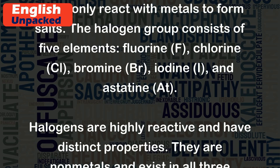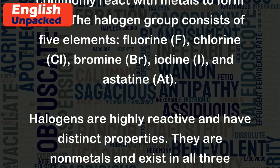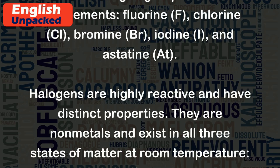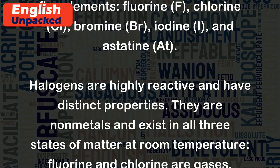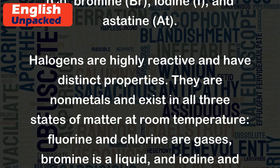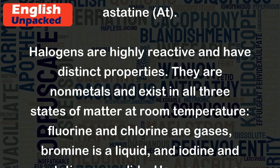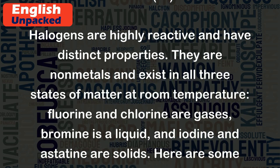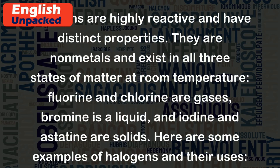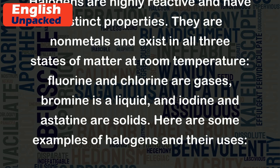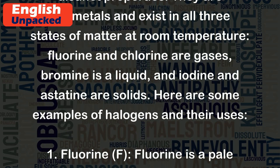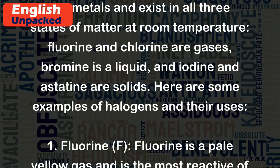iodine (I), and astatine (At). Halogens are highly reactive and have distinct properties. They are non-metals and exist in all three states of matter at room temperature. Fluorine and chlorine are gases, bromine is a liquid, and iodine and astatine are solids.